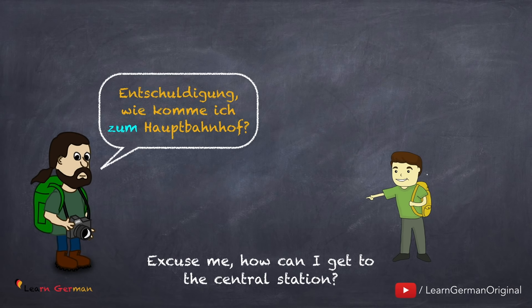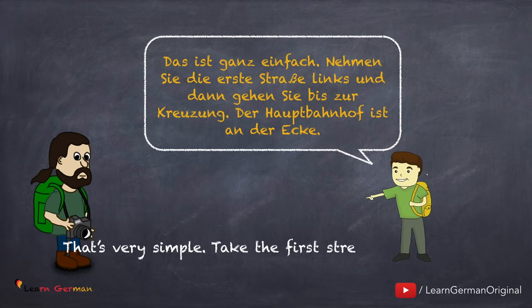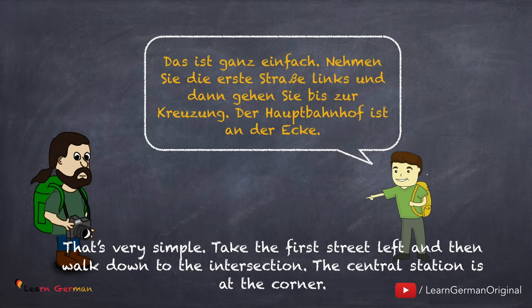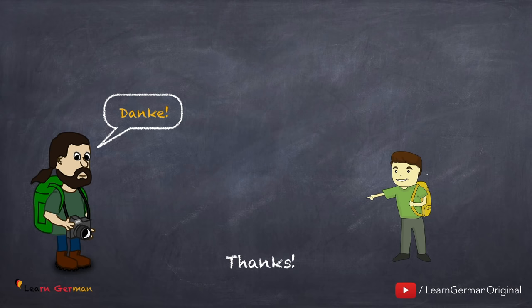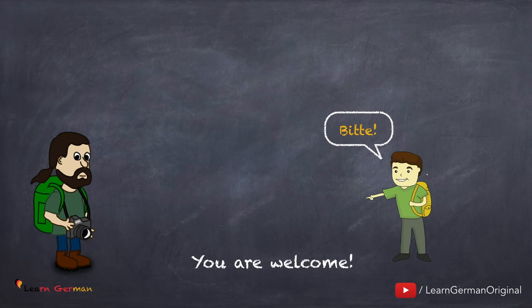Now let's see how to use these structures in practical life. Here is how you ask: 'Entschuldigung, wie komme ich zum Hauptbahnhof?' The answer: 'Das ist ganz einfach. Nehmen Sie die erste Straße links, und dann gehen Sie bis zur Kreuzung. Der Hauptbahnhof ist an der Ecke.' After someone has helped you, you should say 'Danke,' and usually one replies with 'Bitte.'